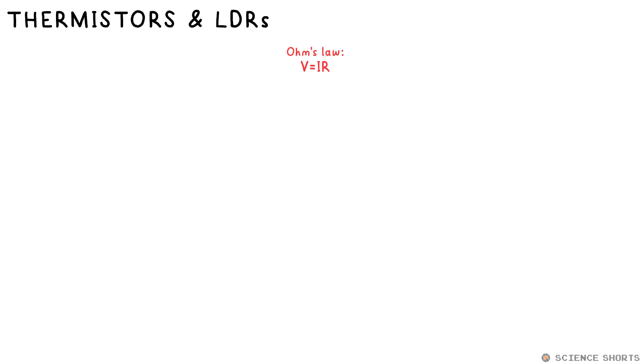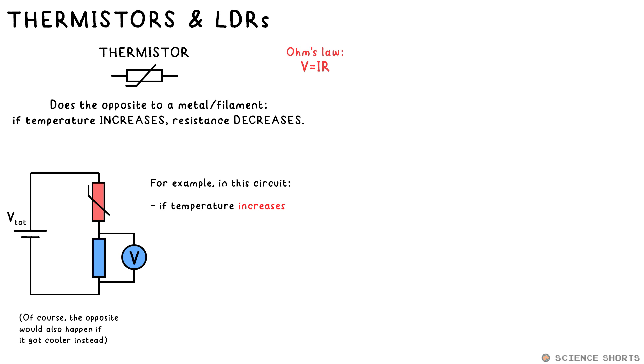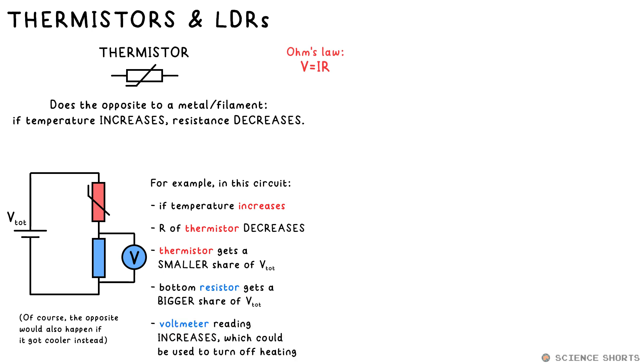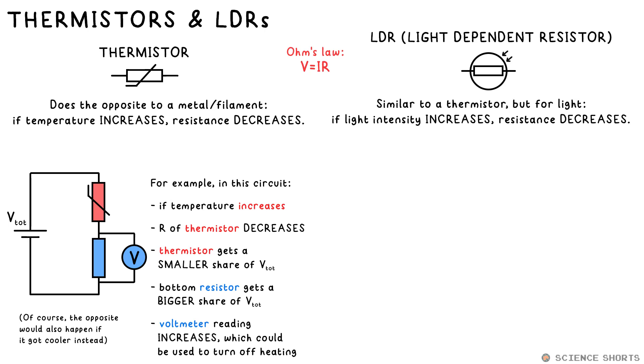It's not only metals that can change resistance. If we use a thermistor, we can make a circuit that responds to changes in temperature. A thermistor's resistance decreases if the temperature increases, so in essence, it does the opposite to a metal. If a thermistor is in a potential divider circuit like here, and the temperature increased, the resistance of the thermistor would go down, and so does its share of the total PD. That means the voltmeter reading here would increase. This could be the basis of a temperature sensor for your central heating.